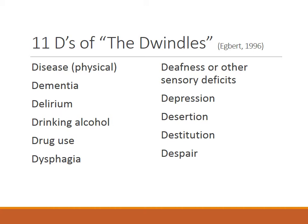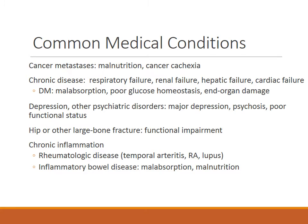Some of the geriatric syndromes include cognitive impairment, constipation, pain, falls, pressure ulcers, incontinence, functional decline, adverse drug events, malnutrition, and dehydration. It's important to bear this in mind when caring for older adults. Physical disease is a precipitant of geriatric failure to thrive. Common medical conditions that can accelerate it include cancer with malnutrition and cachexia, and underlying chronic diseases like respiratory failure, renal failure, hepatic failure, cardiac failure, and diabetes — all of which can affect absorption.